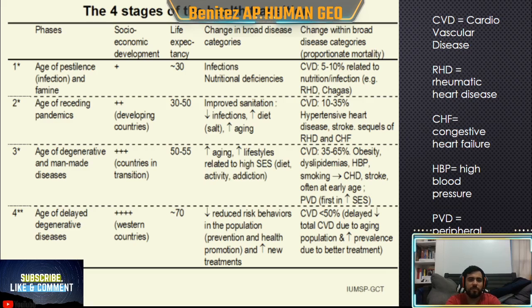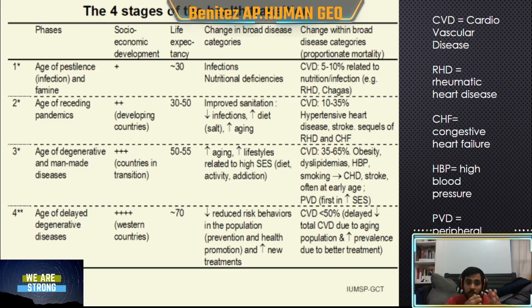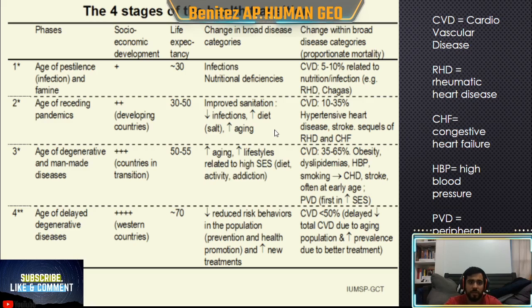There's one more slide with additional information about the four stages. I'm going to upload the PowerPoint and this recording. I need you guys to complete the Demographic Transition Model worksheet — figure out the birth rates, the death rates, and describe what happens at each stage. If you have any questions, my office hours on Wednesday are changed to 1 o'clock instead of 2. See you guys soon.